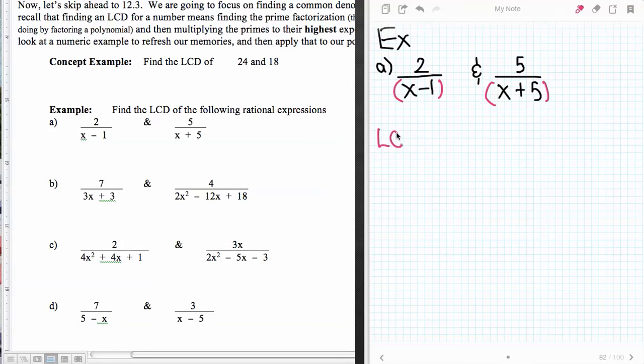So my least common denominator for two binomials that are prime polynomials would just be those prime numbers. This would be like if I were to have two fractions with prime numbers as the denominators.